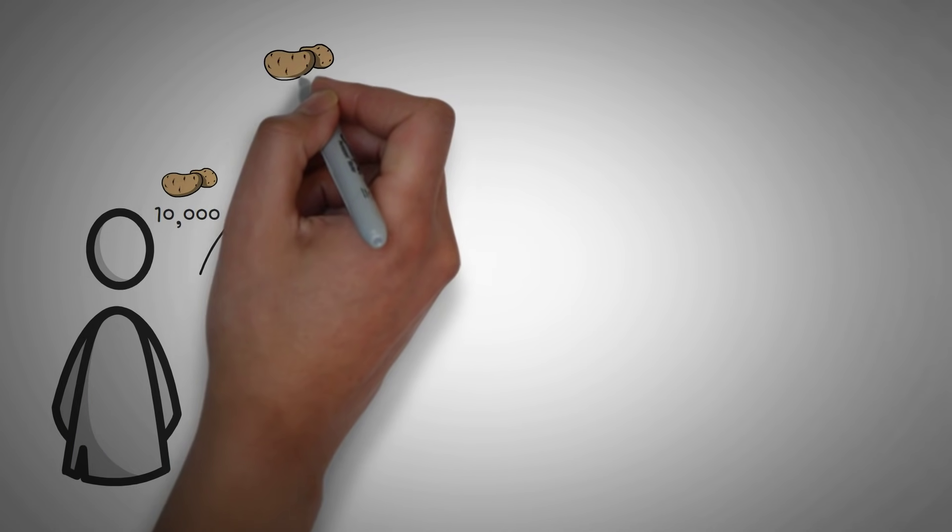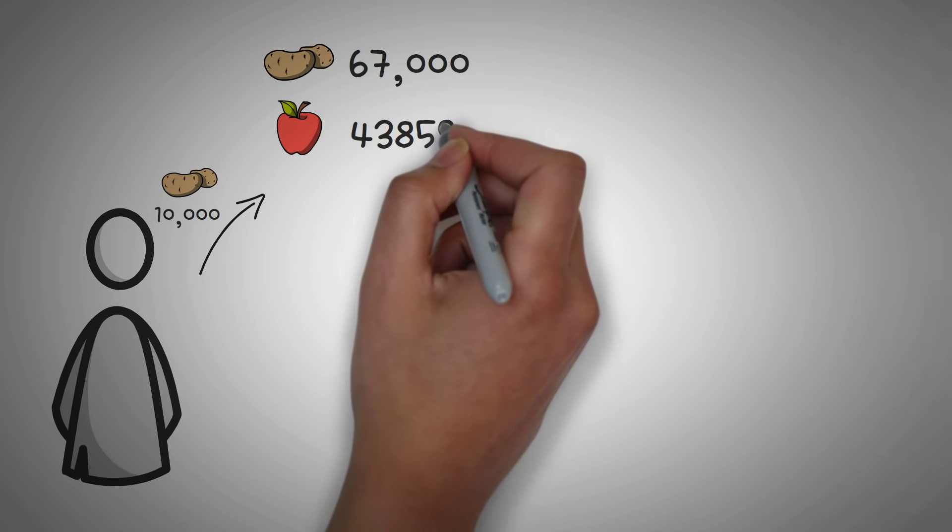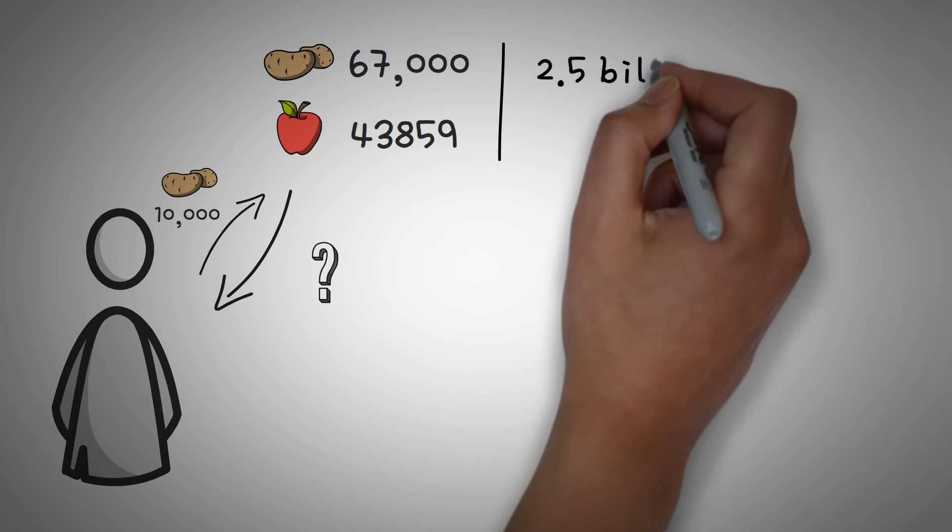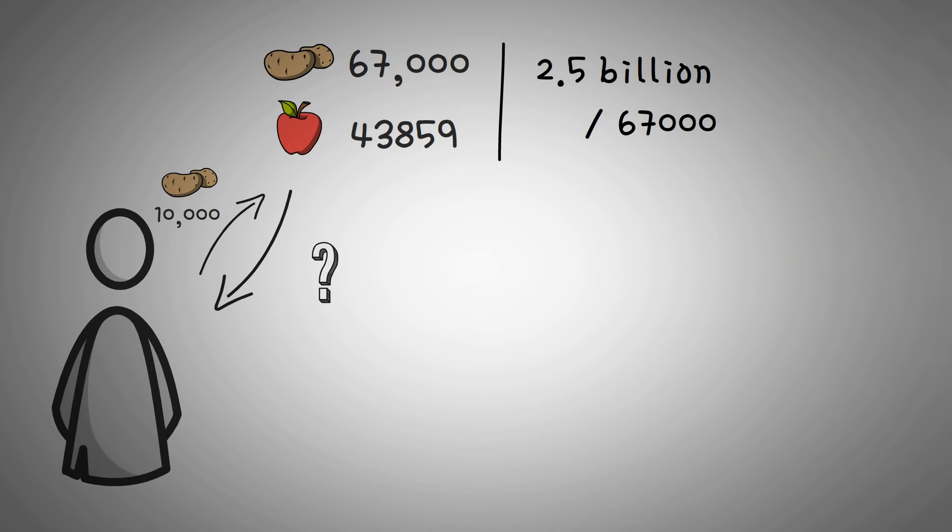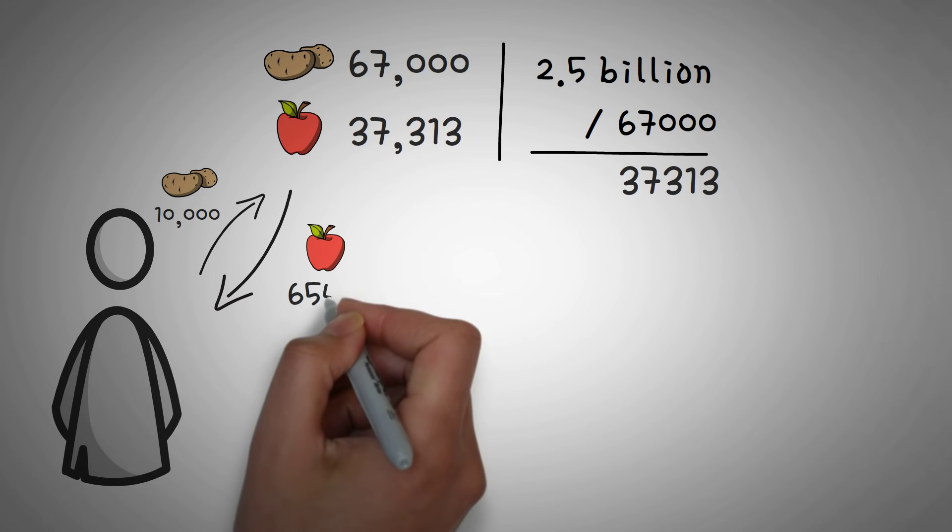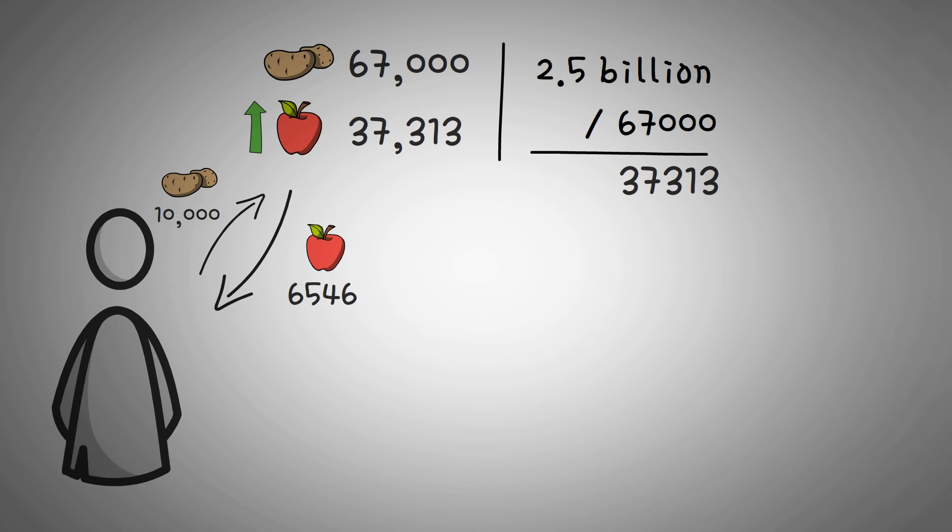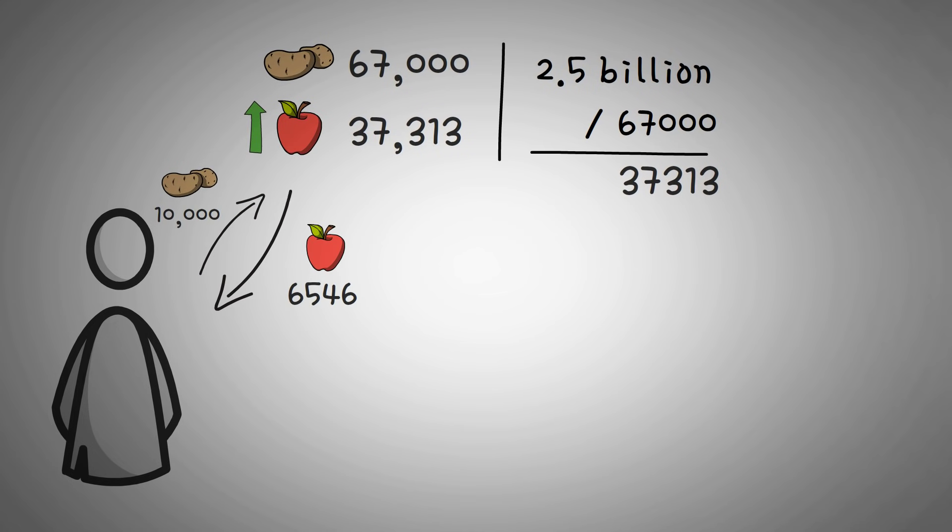Let's say a potato farmer brings up another 10,000 potatoes. So now there are 67,000 potatoes in the pool. We need to know how many apples to give that potato farmer. So we use our constant of 2.5 billion divided by 67,000 and we get 37,313. This means that there should be 37,313 apples in the pool, but right now we have 43,859. So we just calculate the difference and give it to the potato farmer, which is 6,546.